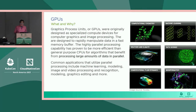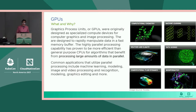GPUs got the name graphics processing units because they were originally designed to manipulate pixels for images and video. People realized that the parallel processing capabilities could also be applied to many other general problems if they could be broken down to allow parallel processing and use of parallel algorithmic solutions. Machine learning is a common application, but there are many more.